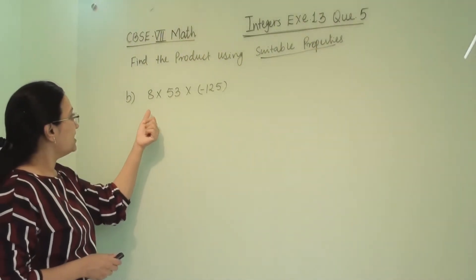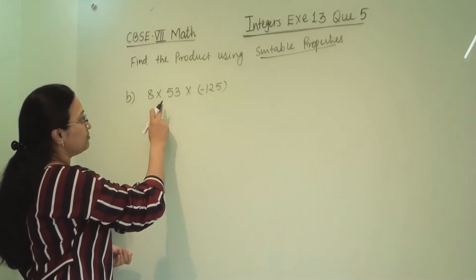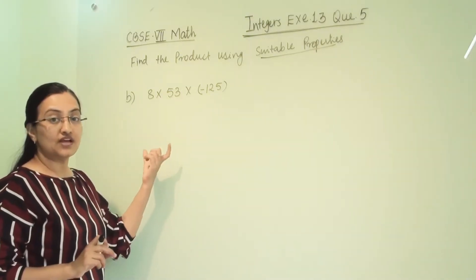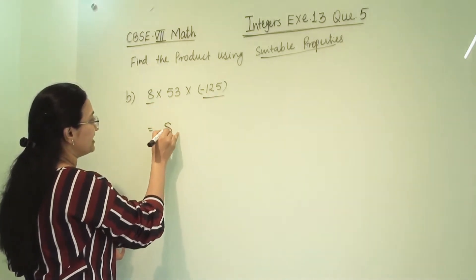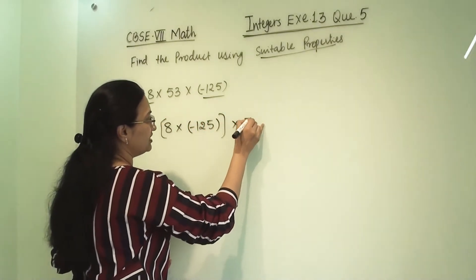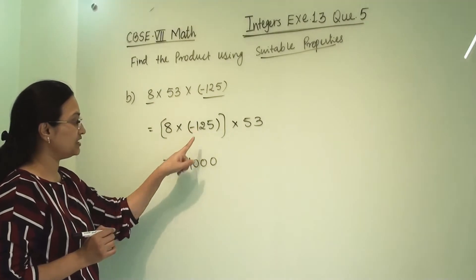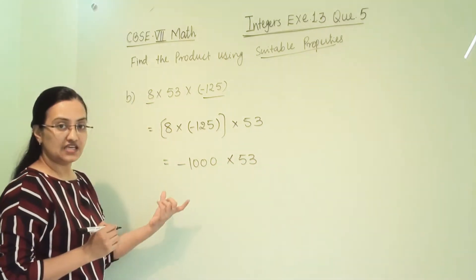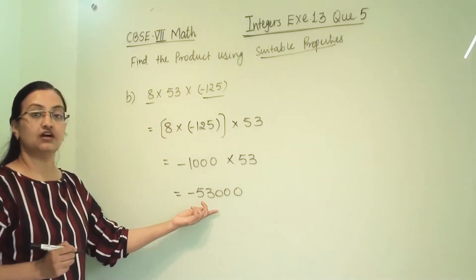Second numerical: 8 × 53 × (-125). When multiplying three terms, we normally multiply three times. But according to the associative property of integers, we can club 8 and -125 together, giving us 8 × (-125) × 53. This gives -1000 × 53, so the answer is -53,000.